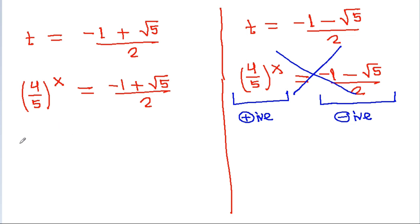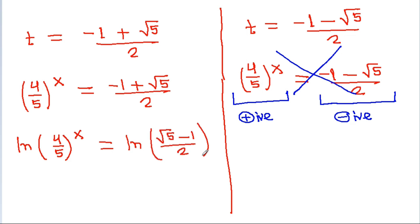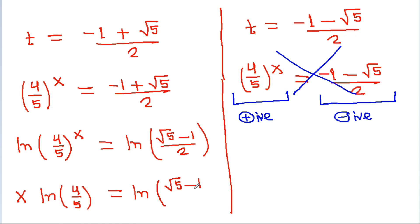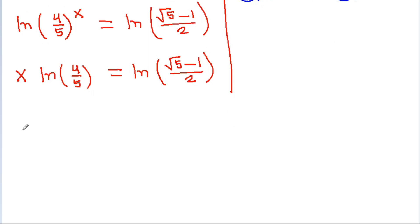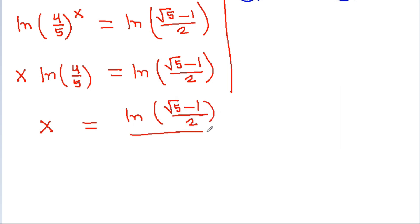So we take t equal to minus 1 plus square root of 5 by 2. Taking ln of both sides, ln of 4 by 5 power x is equal to ln of root 5 minus 1 by 2, which gives x times ln of 4 by 5 equal to ln of root 5 minus 1 by 2. Therefore, x is equal to ln of root 5 minus 1 by 2, divided by ln of 4 by 5.